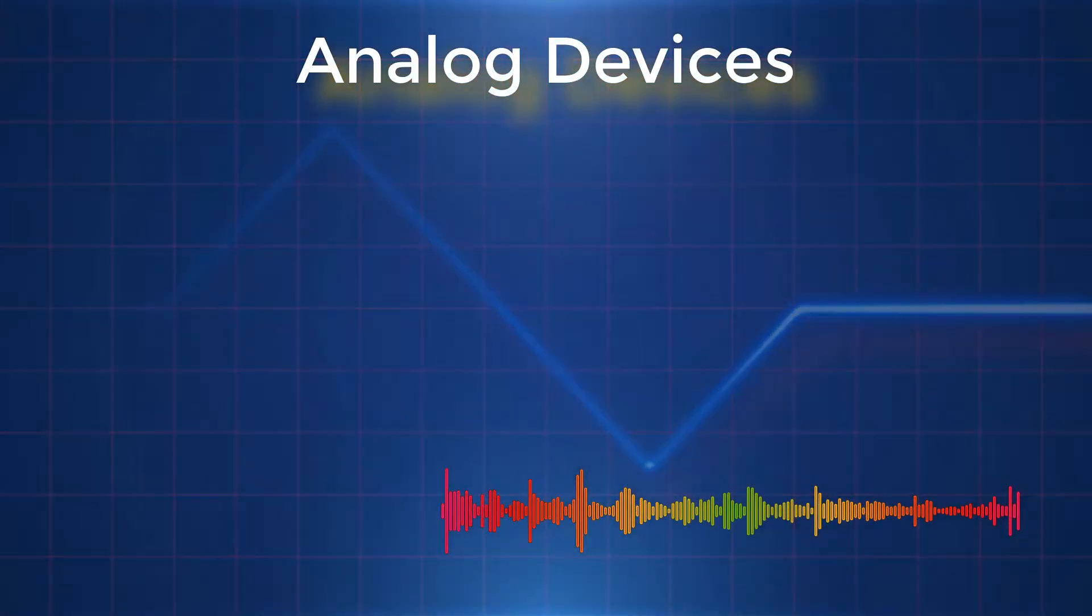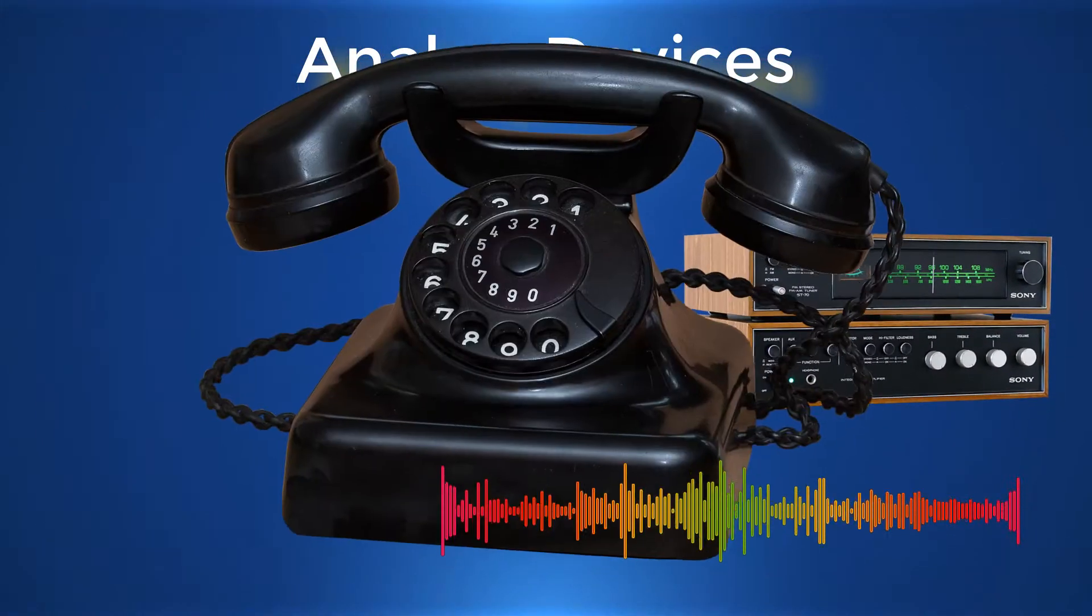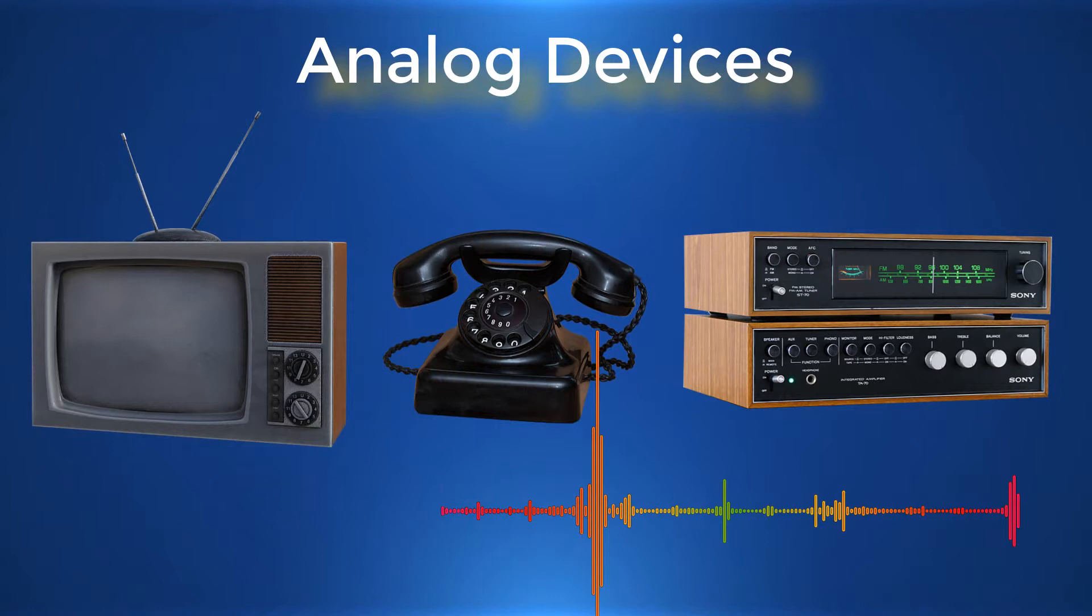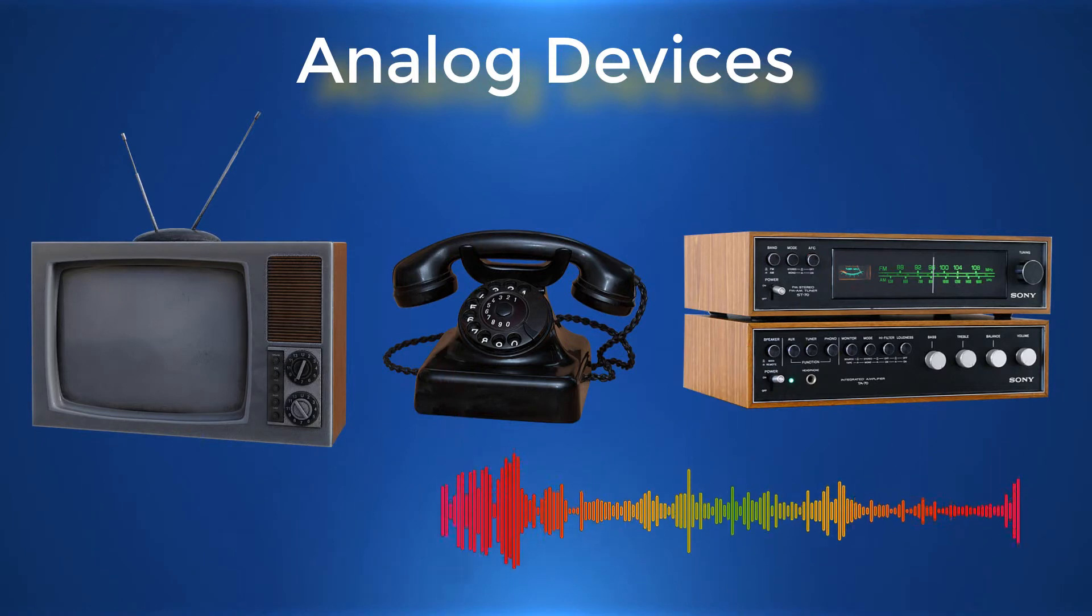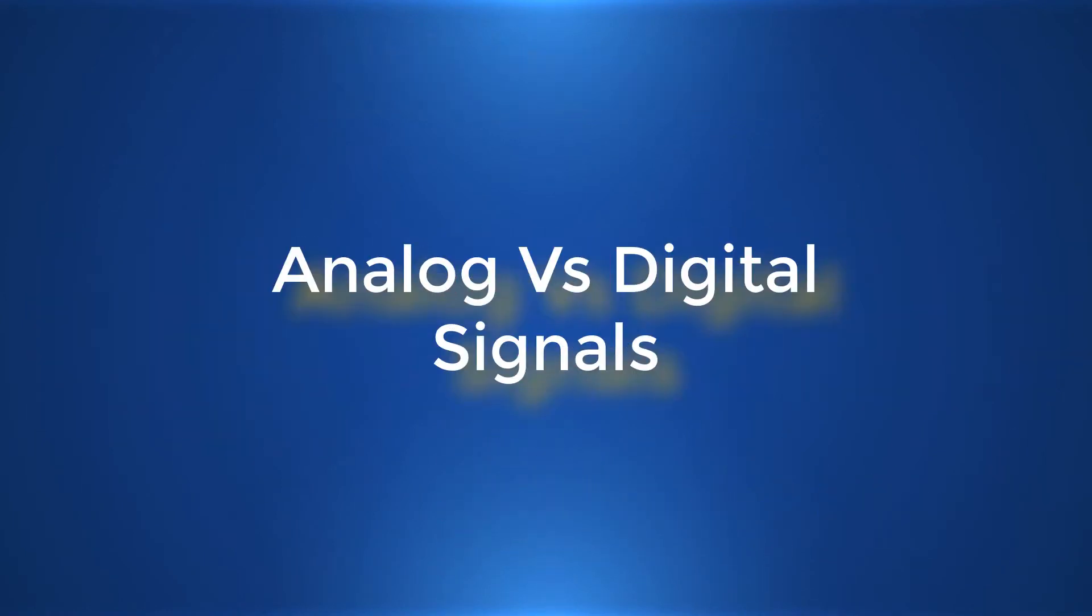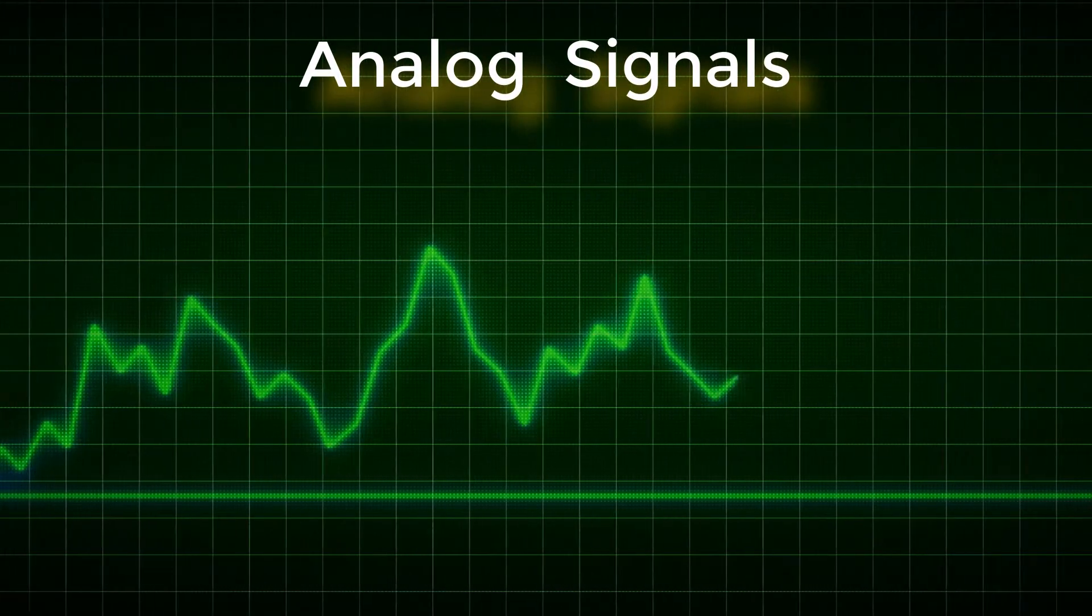Examples of analog devices are amplifiers, old telephone lines, and old televisions. Let's understand analog and digital signals well.